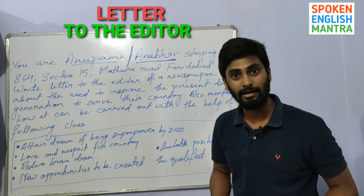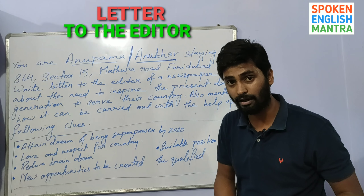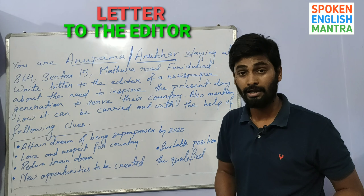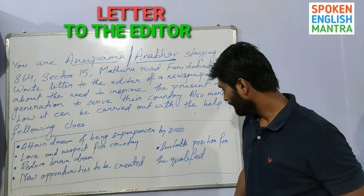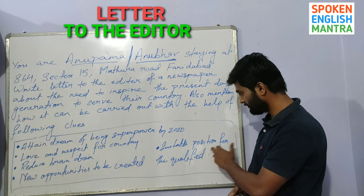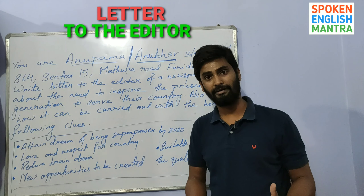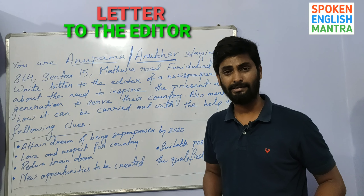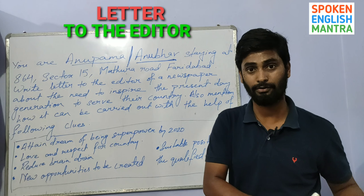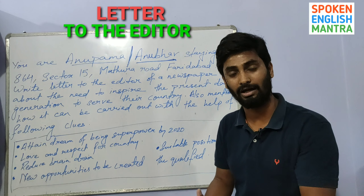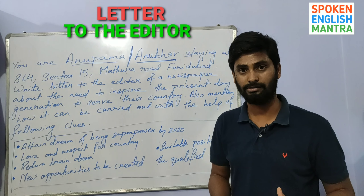Here is what you have been given as clues. First: attain the dream of being a superpower by 2020 — it means you have to do something so that by 2020 the country will be made a superpower. That will be a full plan. Second: love and respect for the country — definitely love and respect for the country, so that people think about it.